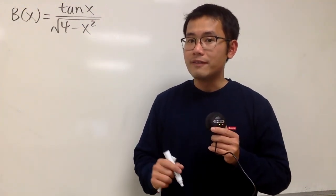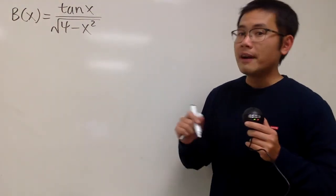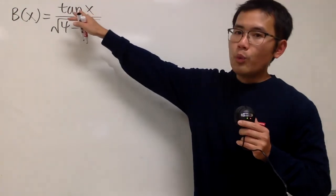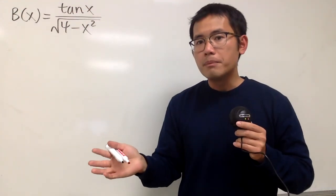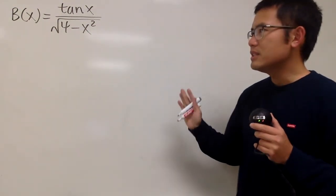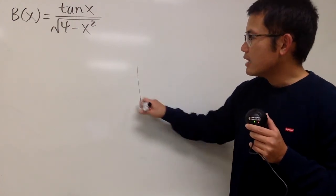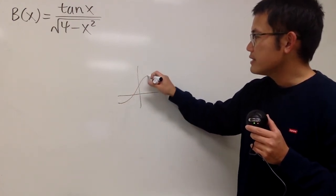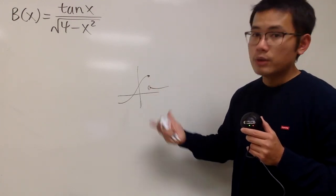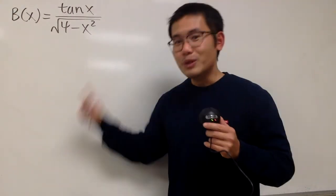For this question, we are going to find out why the function is continuous on its domain. We just have to focus on finding its domain, because this is not a piecewise function. When we have tangent x, it's not continuous everywhere, but it is continuous on its domain. Sometimes you may have a piecewise function that's defined everywhere but not continuous, so you have to check the endpoint. But again, we just have to find its domain.